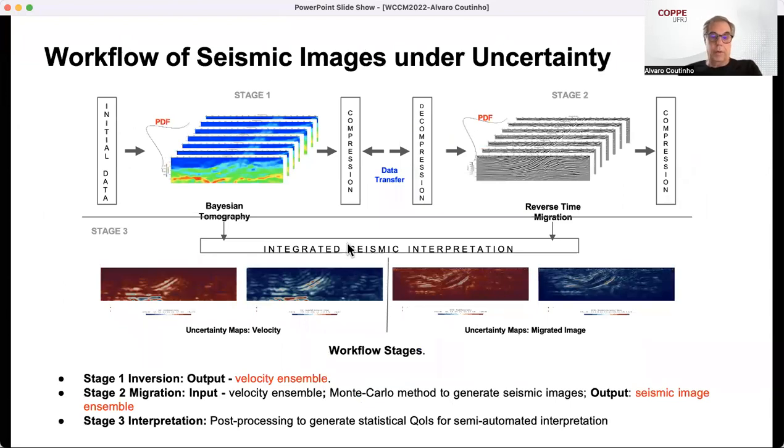Having a closer look at the workflow, we have the initial data. Stage one produces the Bayesian tomography. We compress this data, decompress in order to do what we call reverse time migration, where we have to solve a forward and a backward wave, acoustic wave propagation in our case, and compose this in the image condition with basically a correlation. Then we provide the integrated seismic interpretation with uncertain maps for the properties, for uncertainty in the velocity, and uncertainty maps for the migrated image. So stage one is inversion with output as velocity ensemble. Stage two is migration, which inputs the velocity ensemble, then the Monte Carlo method to generate seismic images, and output is seismic image ensemble. Stage three is interpretation, then we post process all this to generate the statistical quantities of interest for the semi-automatic interpretation of our results.